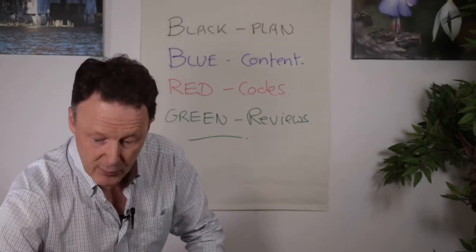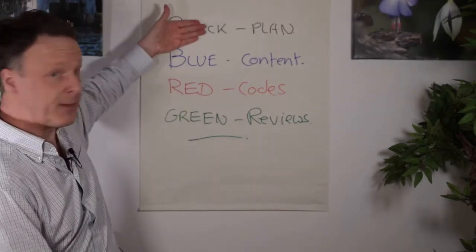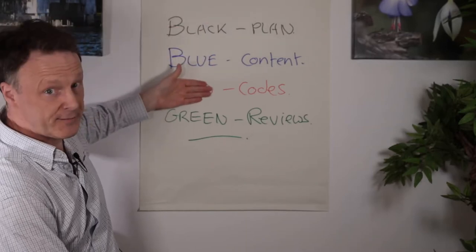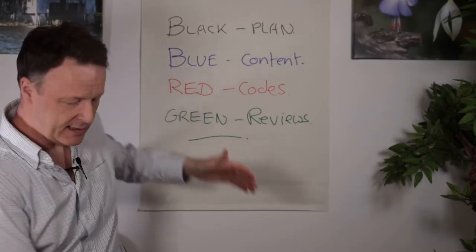So a really simple system: black for the planning, blue for the content, red for any codes and green for reviews.